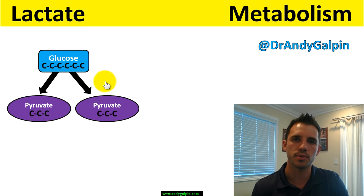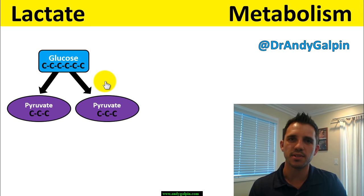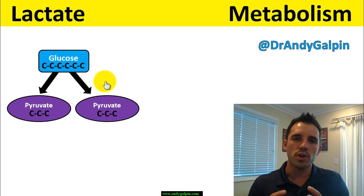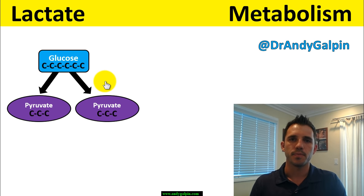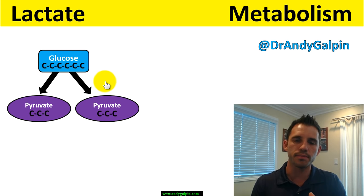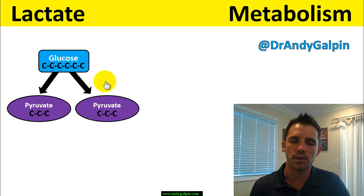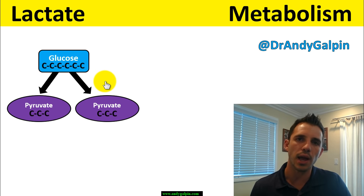We call those three-carbon molecules pyruvate. Now for the biochemists: whenever you split atoms from their bond, it takes some energy to split them apart but then gives off some energy. That overall balance can be positive or negative. In the context of human skeletal muscle physiology — particularly with exercise — this reaction is exergonic, meaning it gives off energy.